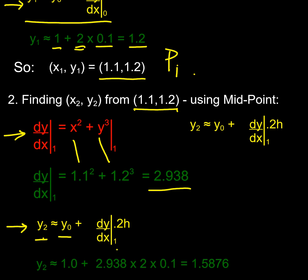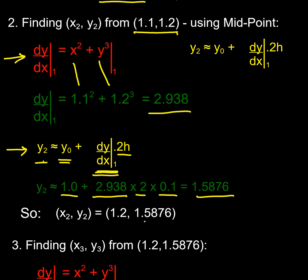Because I want to find what my p2 is, and I find my p2 by starting at p0 and using the gradient from p1, and I'm going twice the increments. So I start at p0, my y-value was 1.0, my gradient at p1 is 2.938, and I'm going 2 lots of 0.1, so my new y-value is 1.5876. That's higher than it was from the Euler one, so there's my p2.